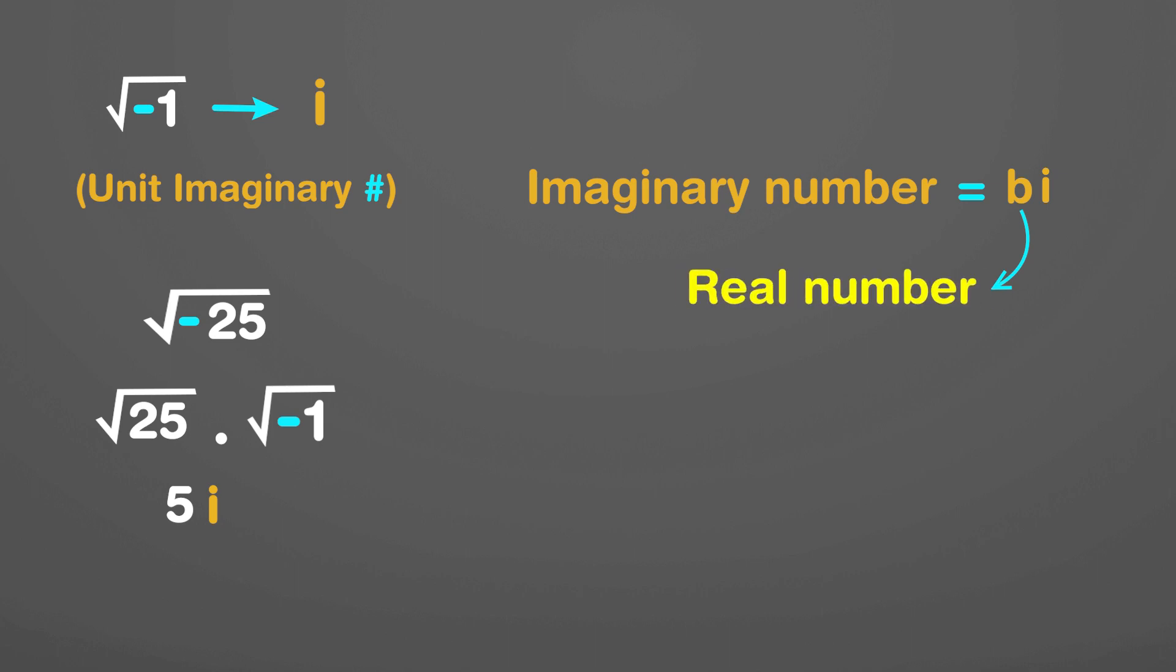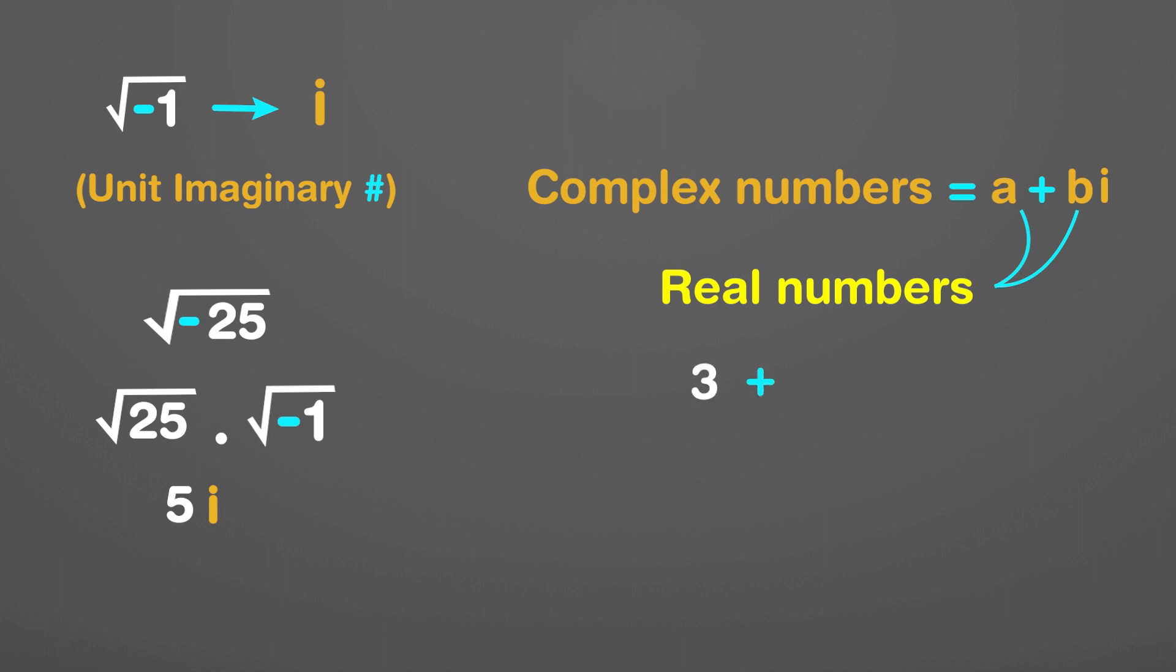So far, we have seen what are real and imaginary numbers. Now it's time to understand what complex numbers are. Complex numbers are an extension to imaginary numbers. When we add a real number to an imaginary number, we get complex numbers. They are of the form a plus bi, where a and b are real numbers. For example, if we add 3 to 5i, we get the complex number 3 plus 5i.